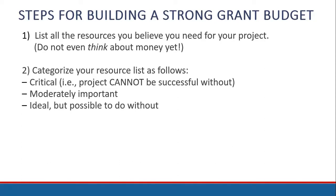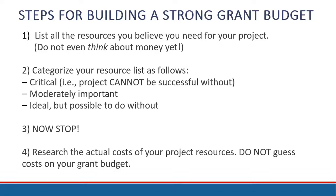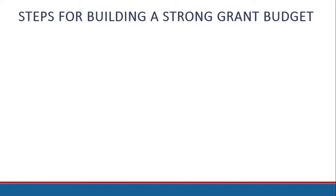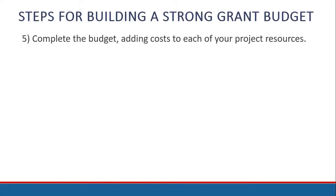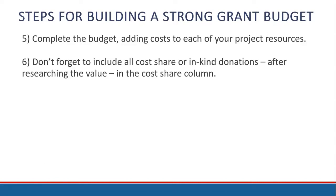Now, categorize your resource list as follows: items that are critical, as in your project cannot be successful without them; items that are moderately important; and items that would be ideal but possible to do without. Then walk away from your list and go research the actual costs of your project resources — do not guess the costs on your grant budget. After you've done your research, complete the budget, adding costs to each of your project resources. I recommend completing your draft budget in your own spreadsheet, then transferring the data to the chart in the online application later. Don't forget to include all cost share or in-kind donations in the cost share column of your budget chart.